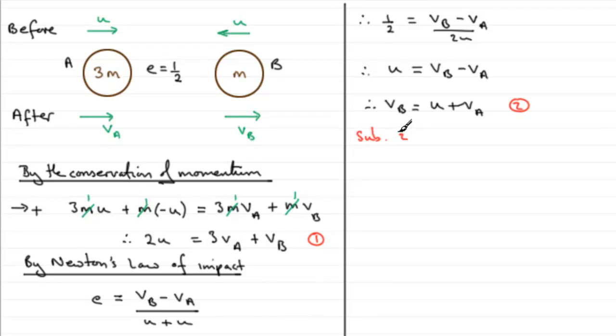If we do that, we've got 2u equals 3 lots of VA, 3VA plus VB, so plus u plus another VA. Tidying this up, we've got 2u, let's take away u from both sides, that leaves 2u minus u gives us u equals 3VA plus another VA, so that's 4VA.